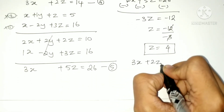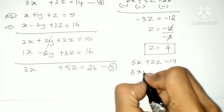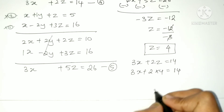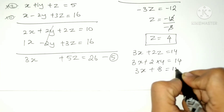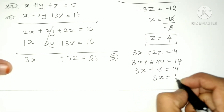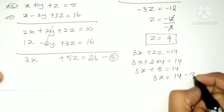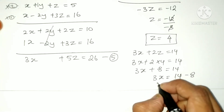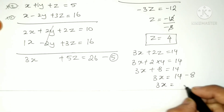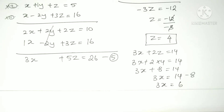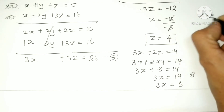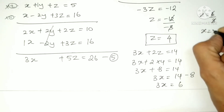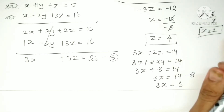Substituting z equals 4 into equation 4: 3x plus 2 into 4 equals 14. So 3x plus 8 equals 14. Therefore 3x equals 6, and x equals 6 divided by 3, so x equals 2.